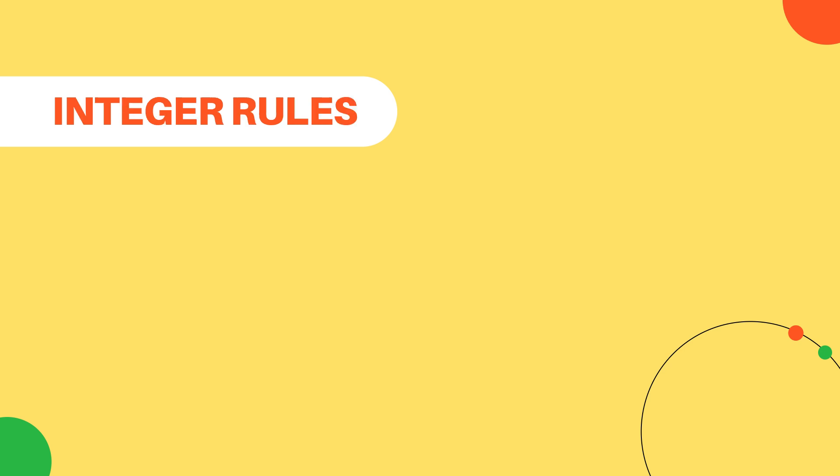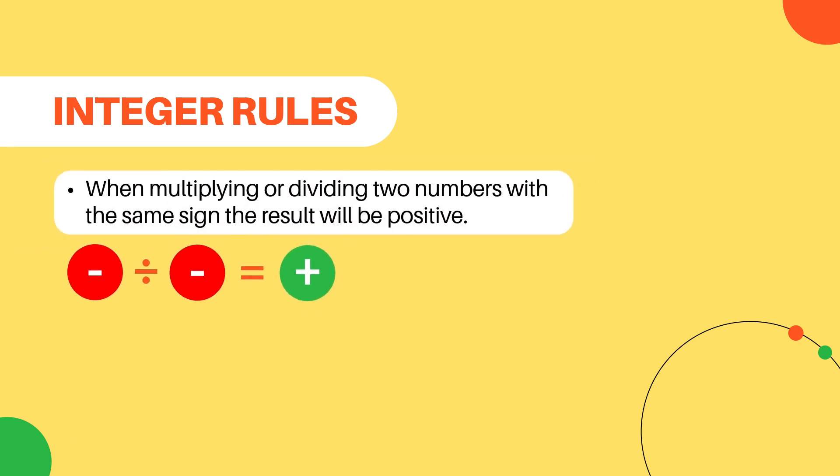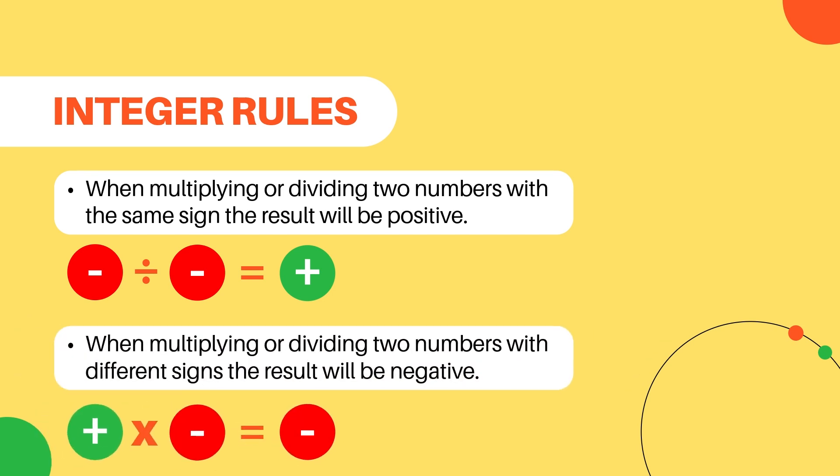To recap, the rules for multiplying and dividing integers are: when multiplying or dividing two numbers with the same sign, the result will be positive. When multiplying or dividing two numbers with different signs, the result will be negative.